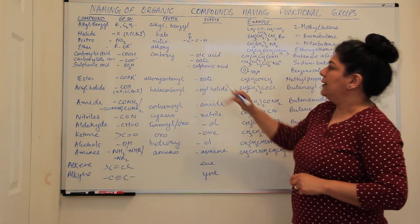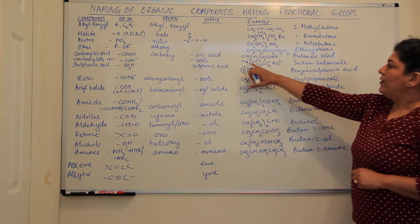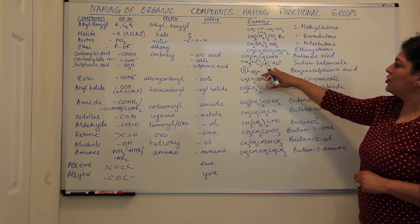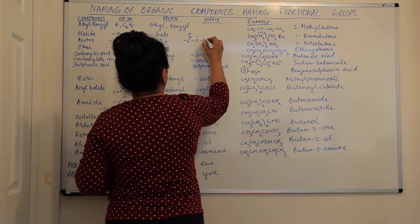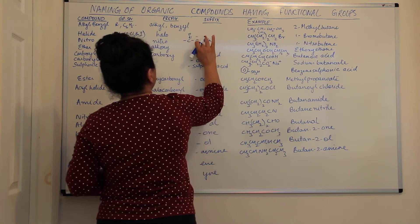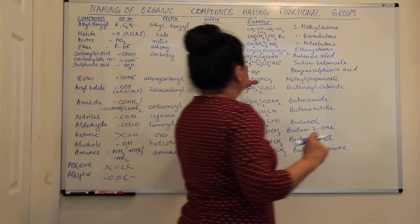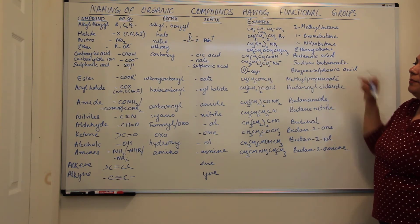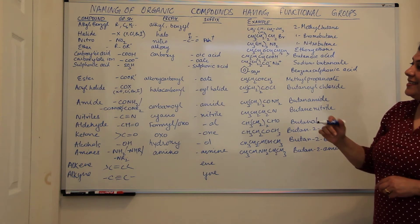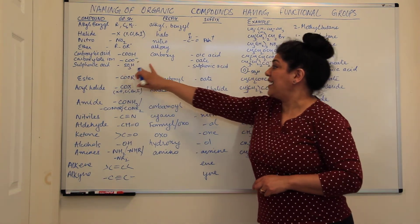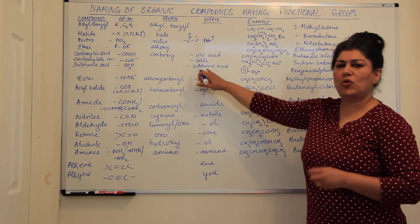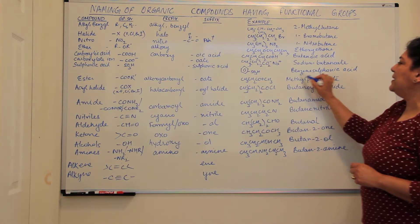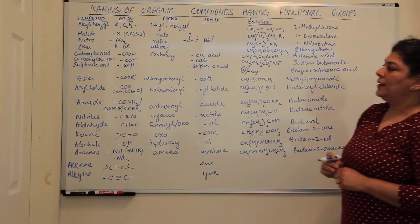The next is the carboxylate ion, always written as 'oate'. For example, COO⁻Na⁺ — the COO is negative and Na is positive, joined by an ionic bond. Counting the carbons: one, two, three, four — this would be sodium butanoate. Next is sulfonic acid, written as SO3H. It is always named as 'sulfonic acid'. For example, a benzene ring with SO3H attached is benzene sulfonic acid.